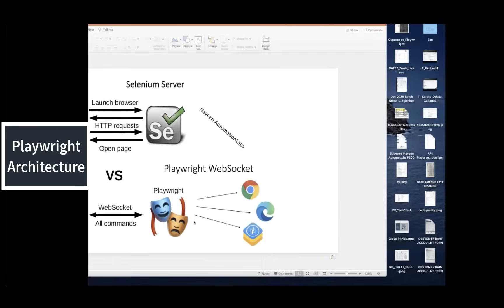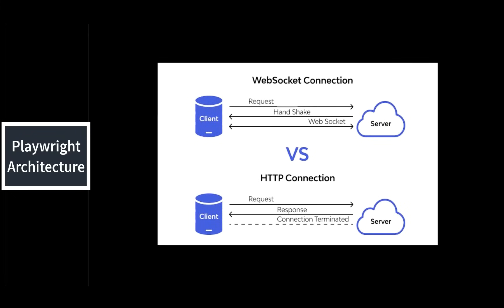To understand WebSocket, let's look at this diagram — it's very simple, I took it from Google. In an HTTP connection, you send a request — for example an HTTP GET call — and then you get the response back to the client, and then immediately the connection is terminated. This is the property of the HTTP connection.